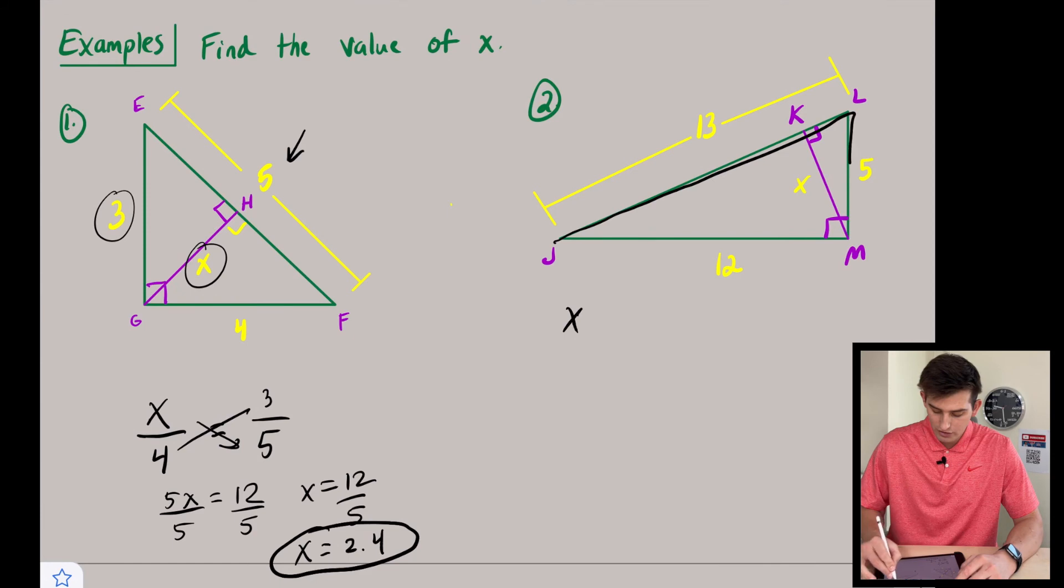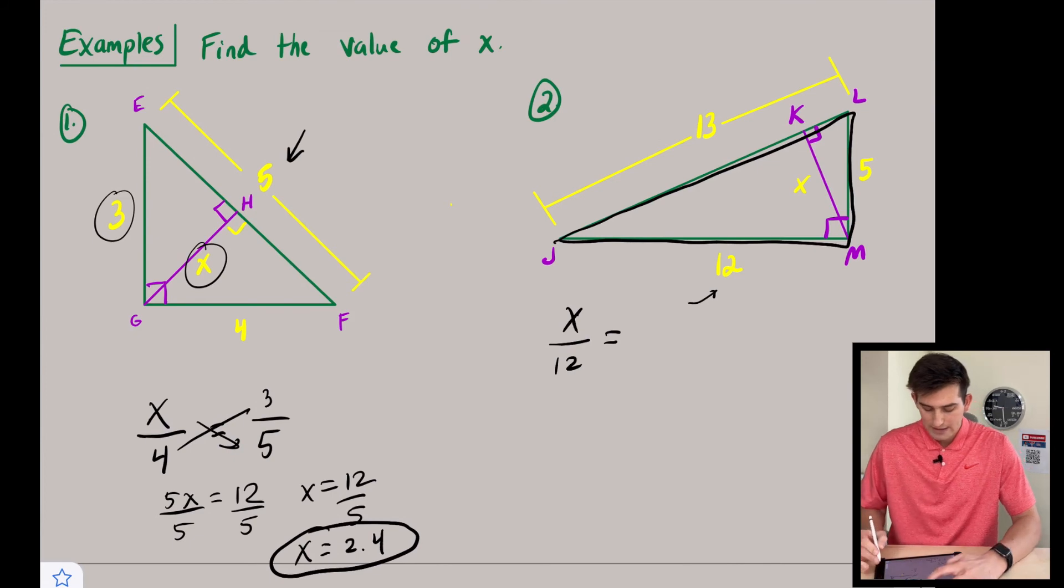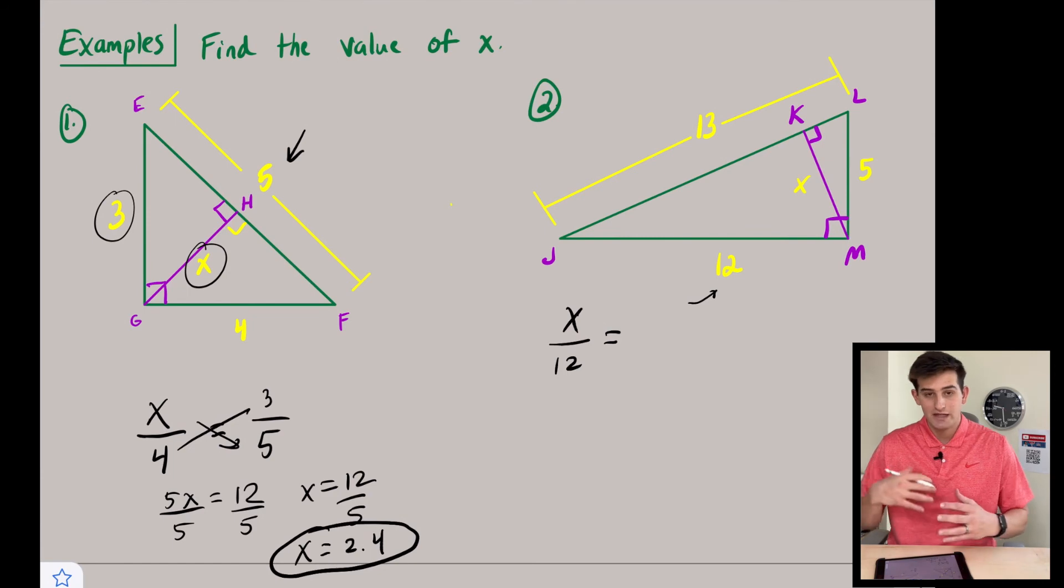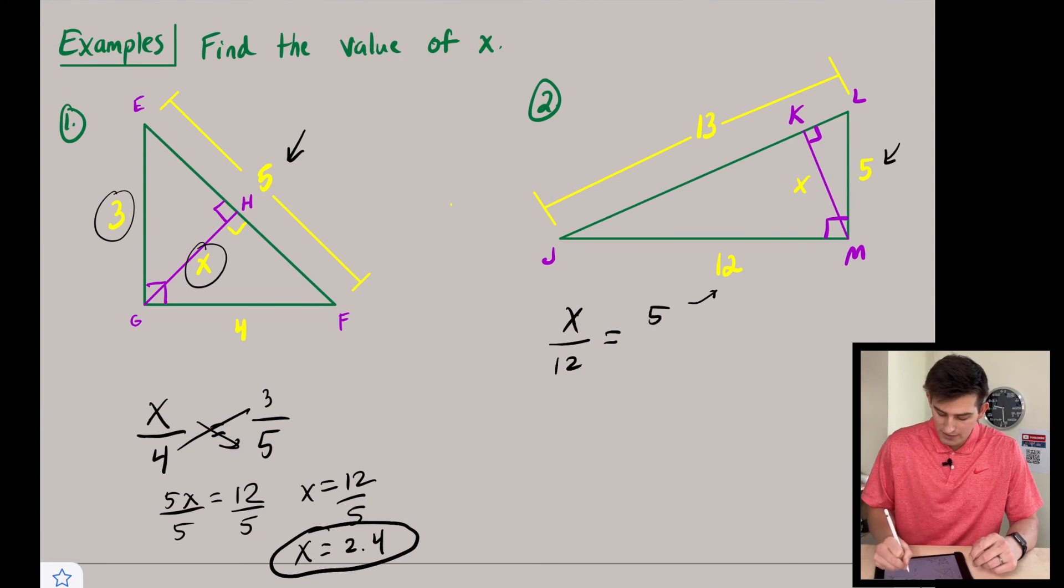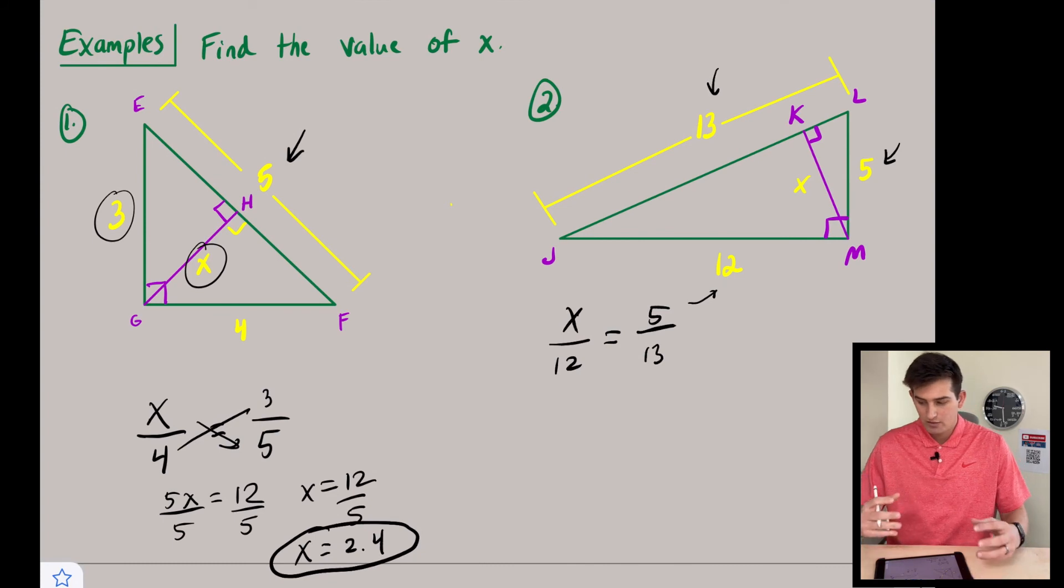So now if we look at our larger right triangle right here, the longer leg would be right here, and that is 12. So we're going to say x over 12. And so now what we're going to do is, just like we did on example number one, find two measures from our two triangles that we have. So for our smaller triangle we have the hypotenuse which is five, and the hypotenuse of our larger triangle is 13.